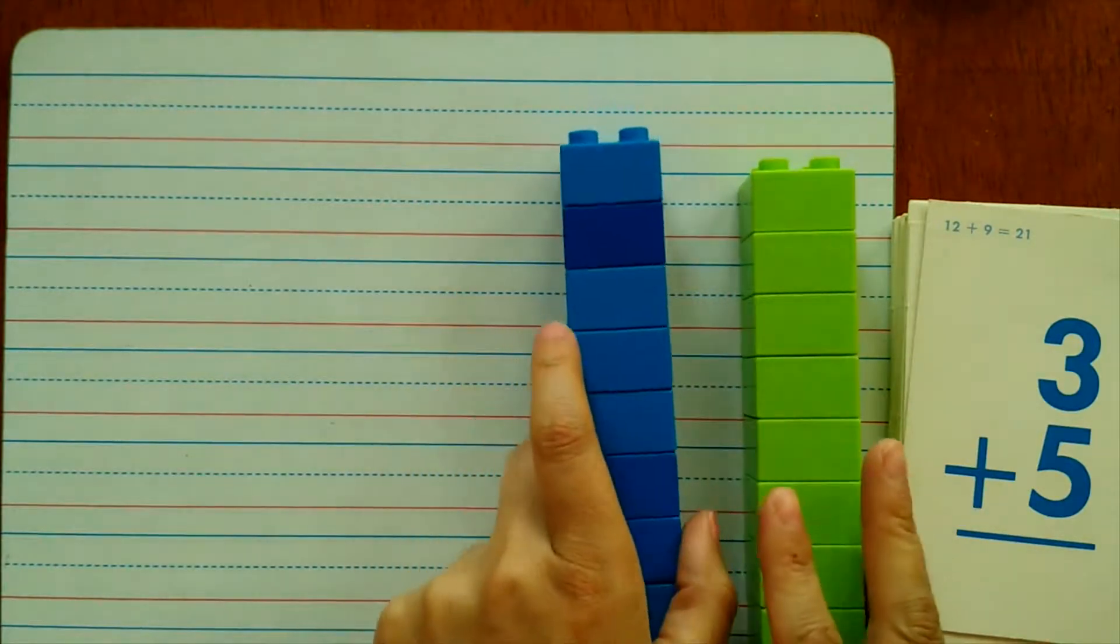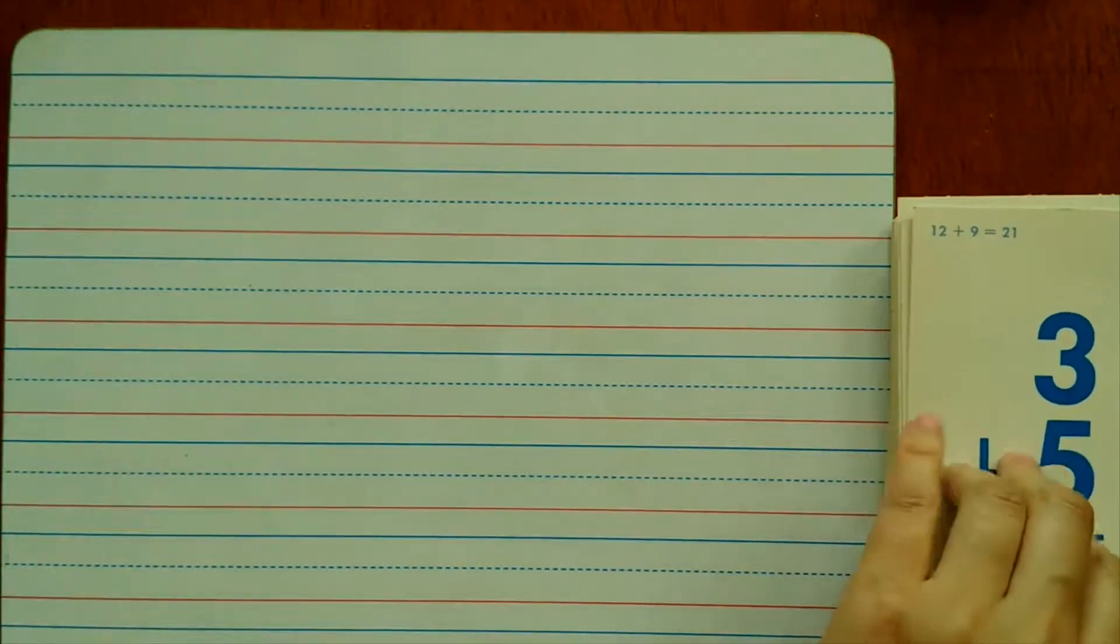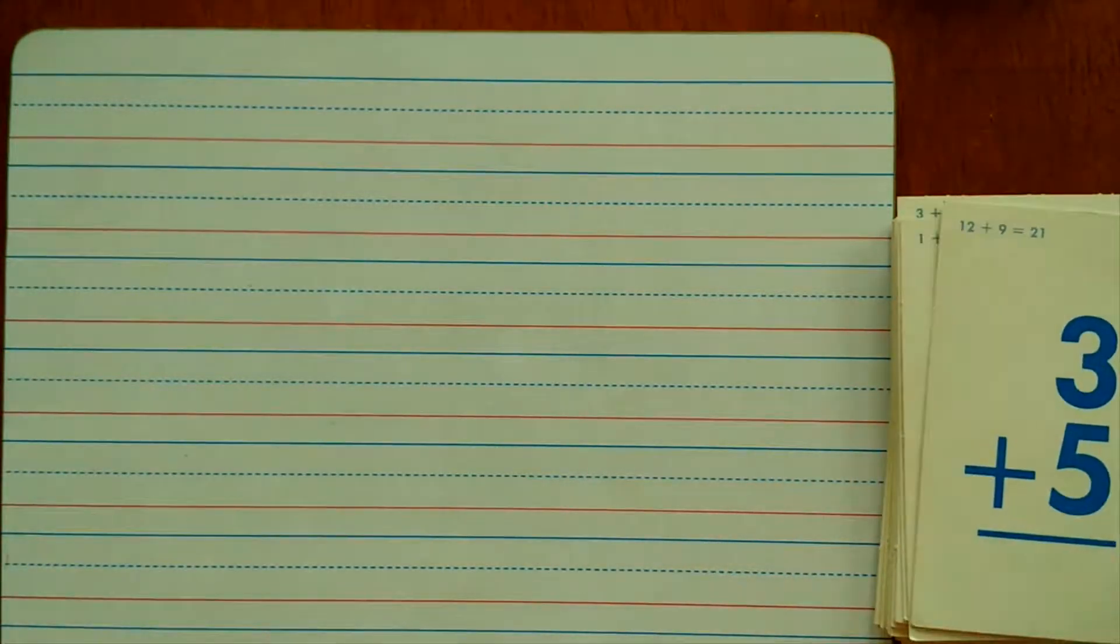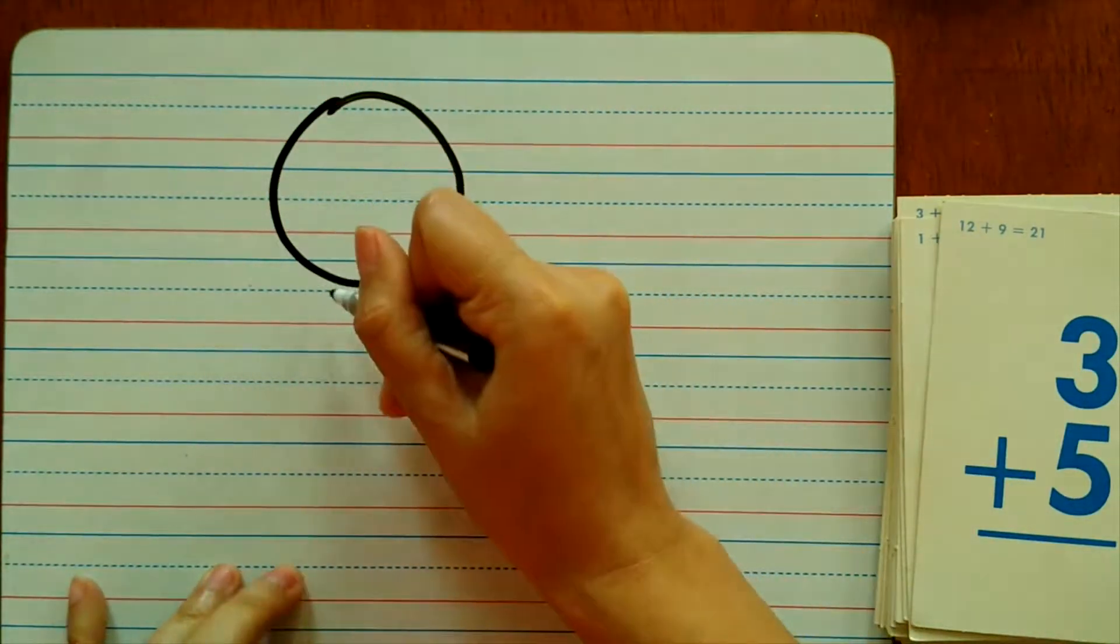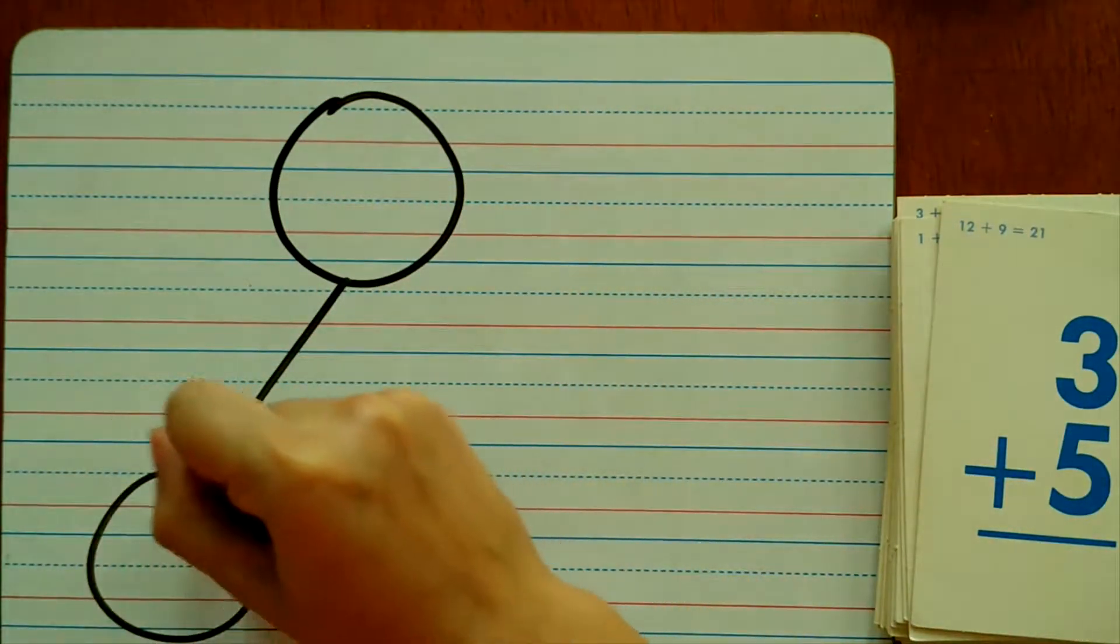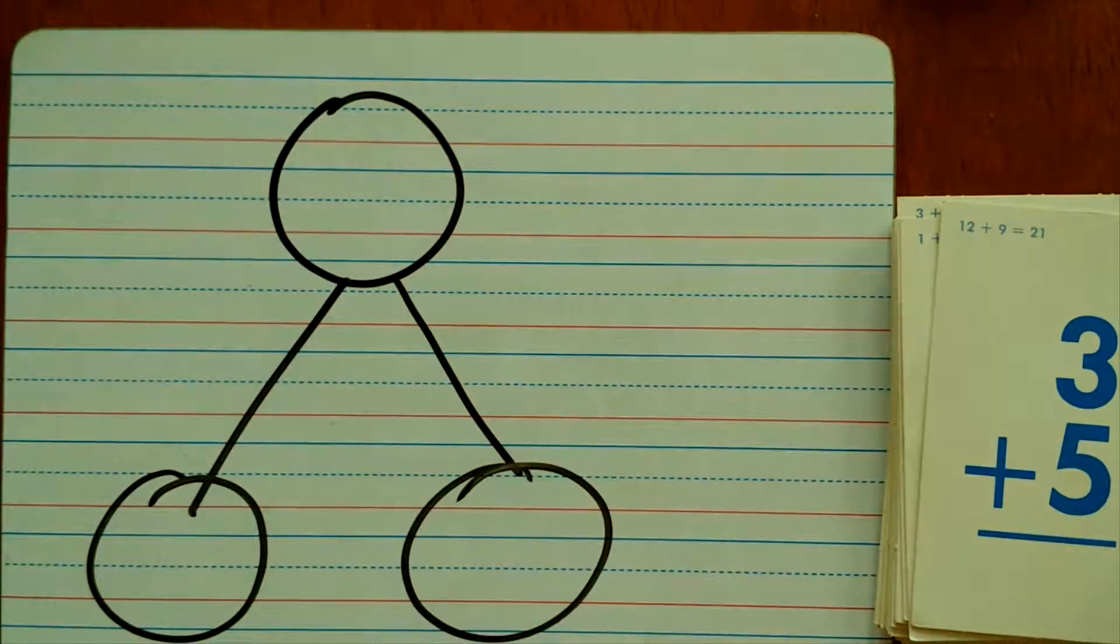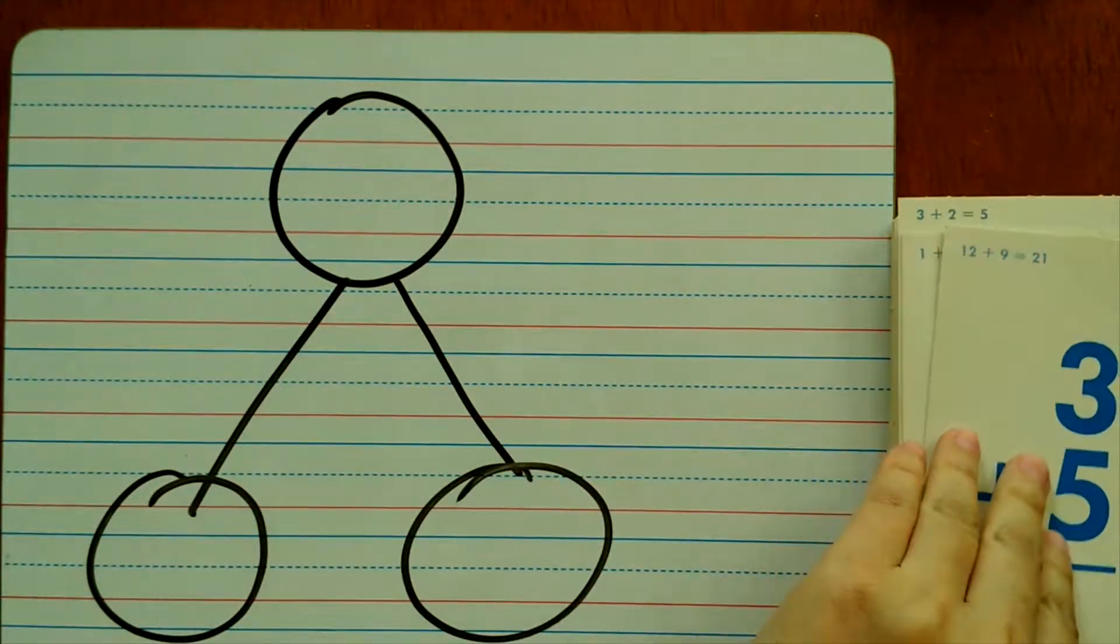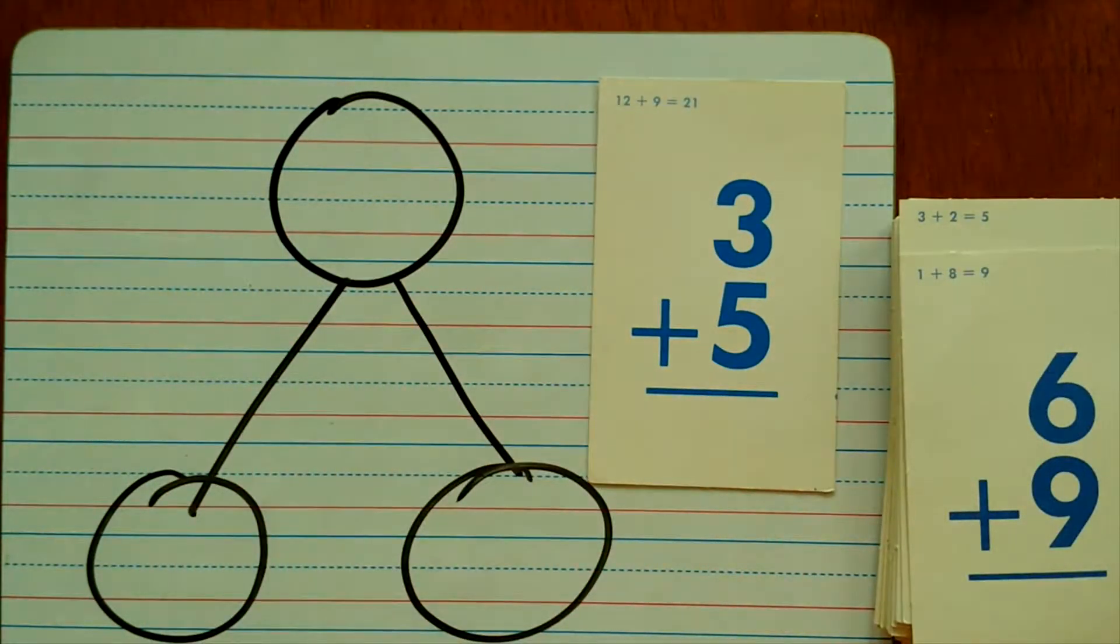What I have her do is we'll get a flashcard, an addition flashcard, we'll draw the number bonds, and then she'll randomly choose a card and I'll have her solve it that way.